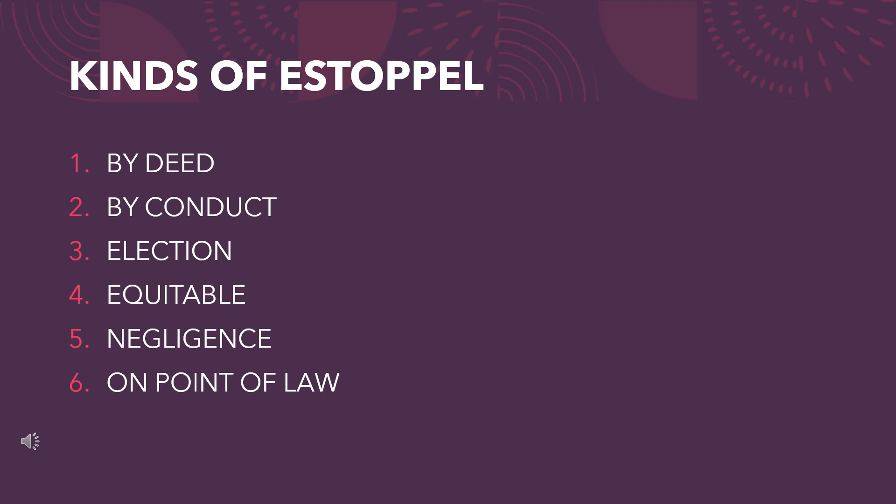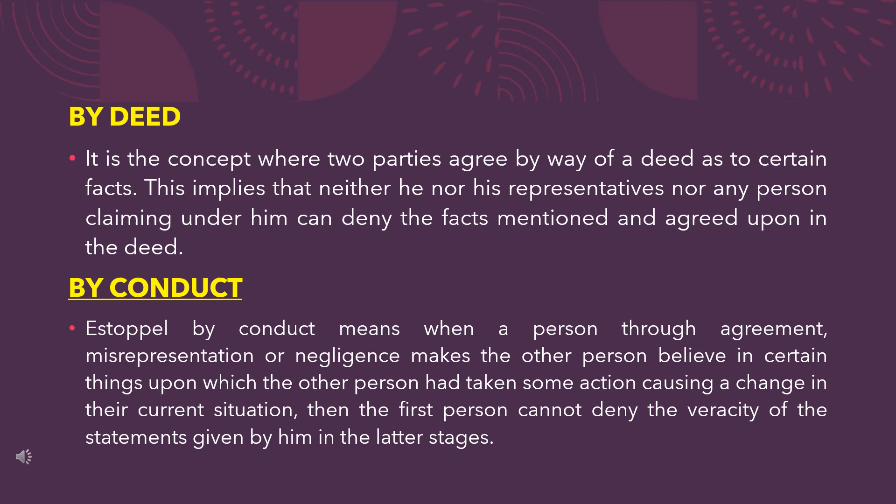Now let's see the kinds of estoppel: first, by deed; second, by conduct; third, election; fourth, equitable; fifth, by negligence; sixth, on point of law. By deed — this is the concept where two parties agree by way of a deed as to certain facts. This implies that neither he nor his representatives nor any person claiming under him can deny the facts mentioned and agreed upon in the deed.